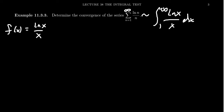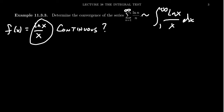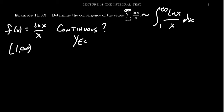Continuity is not such a big deal. Is it continuous? Look at the functions involved: the natural log of x is continuous, x itself is continuous, and we take the quotient. So as long as we avoid division by zero, we'll be continuous. We're working on the interval 1 to infinity, and we never divide by zero there. So yes, this is a continuous function.